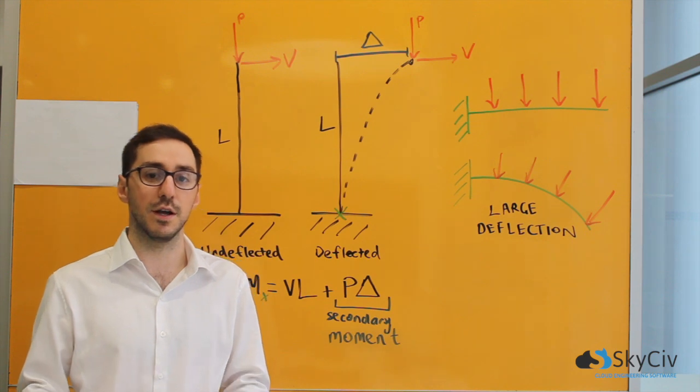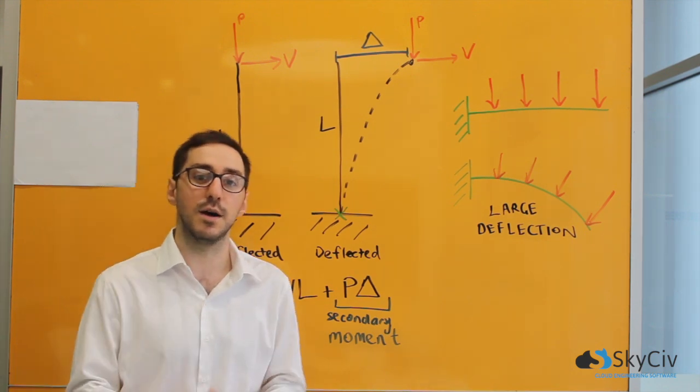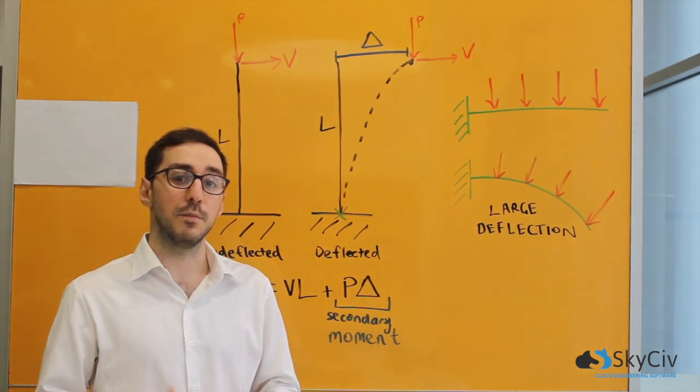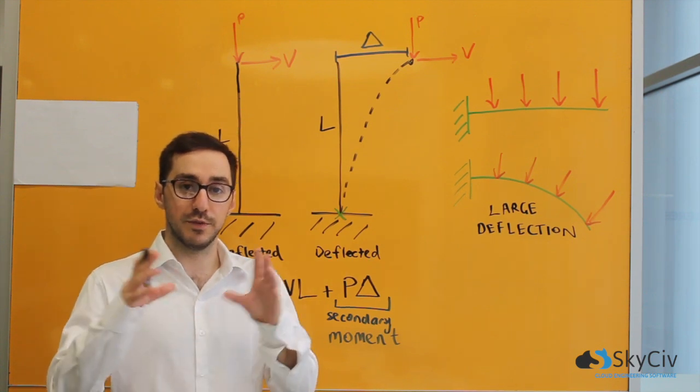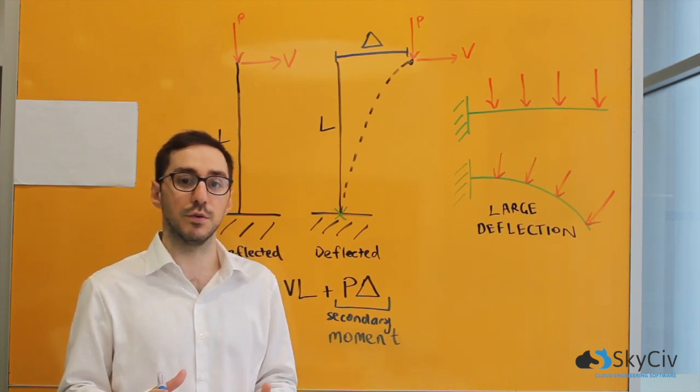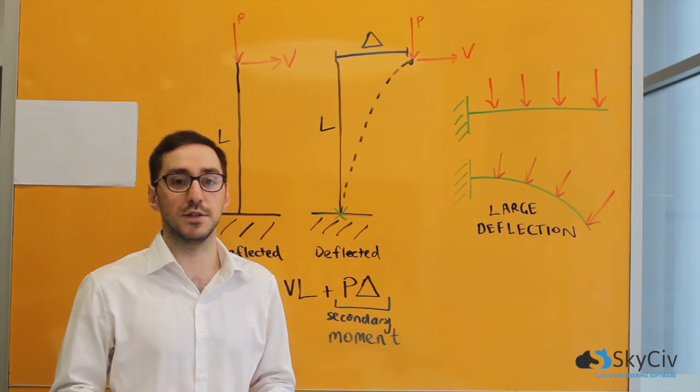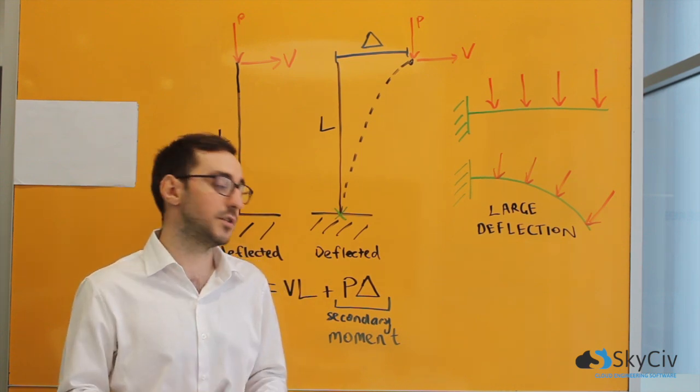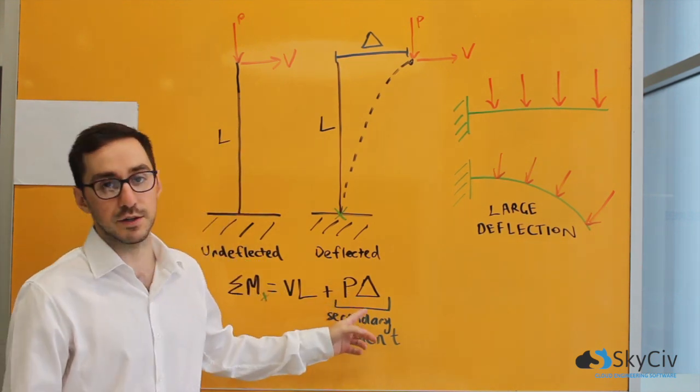If it's not necessary an engineer will usually omit that from the analysis. But it is a really fantastic idea once you've done making all the iterative changes to the model to do a P-delta analysis at the end to ensure that there's no significant P-delta effects in the model.